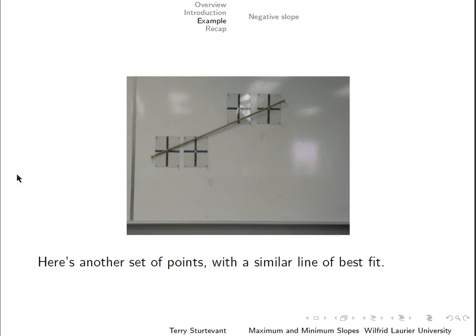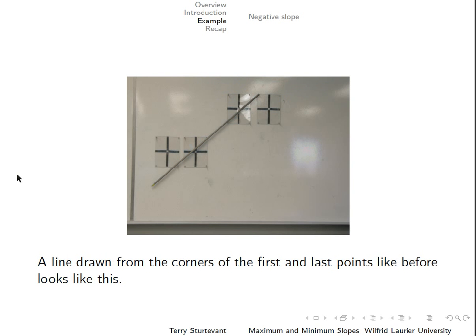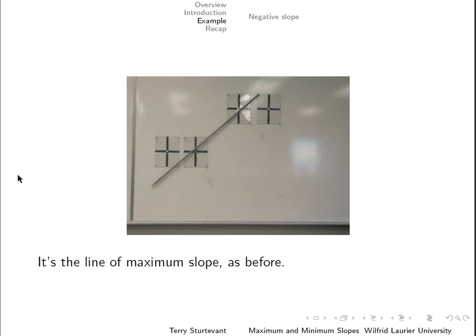Here's another set of points with a similar line of best fit. A line drawn from the corners of the first and last points, like before, looks like this. That gives us the line of maximum slope as before.